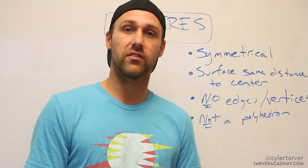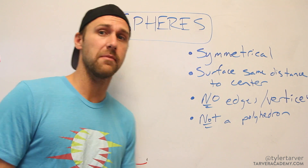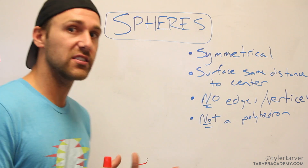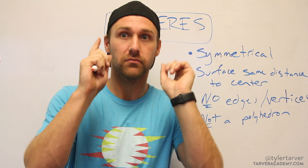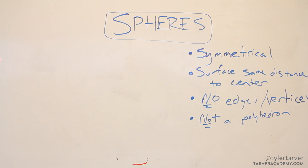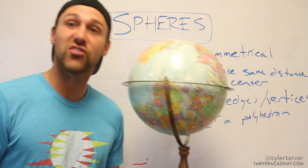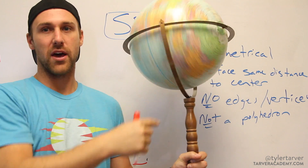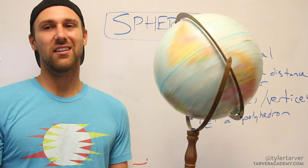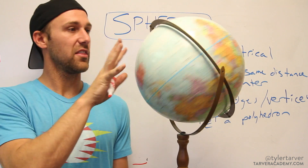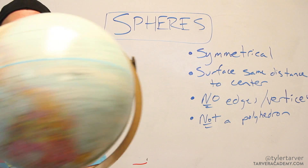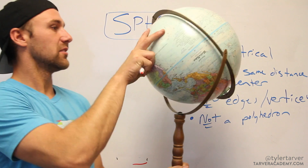What we're talking about today are spheres. What is a sphere? A sphere is essentially a ball — that's the easy answer. Here I have a sphere. The Earth is technically not a perfect sphere, but it's a good example. This ball of the Earth that I have is a perfect sphere.